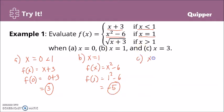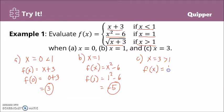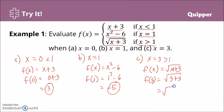Letter C: we have x equals 3. Remember, 3 is greater than 1, so we use the third expression, which is square root of (x + 3). So f(x) = square root of (x + 3). Substituting x = 3, f(3) = square root of 3 plus 3, and that is the square root of 6.